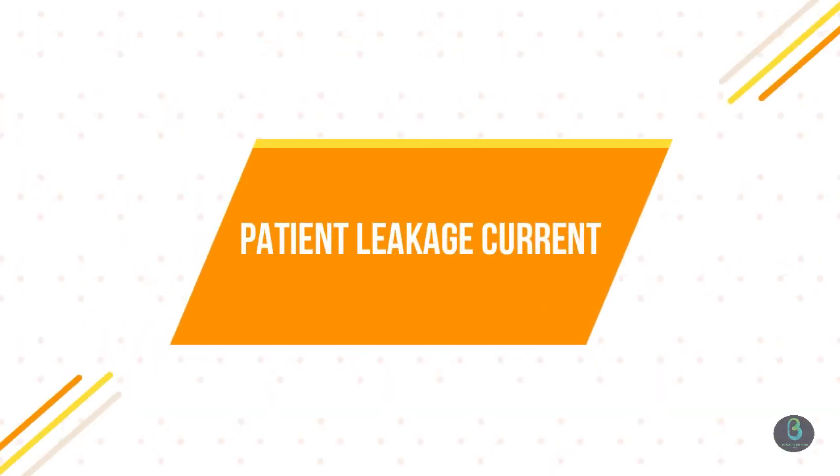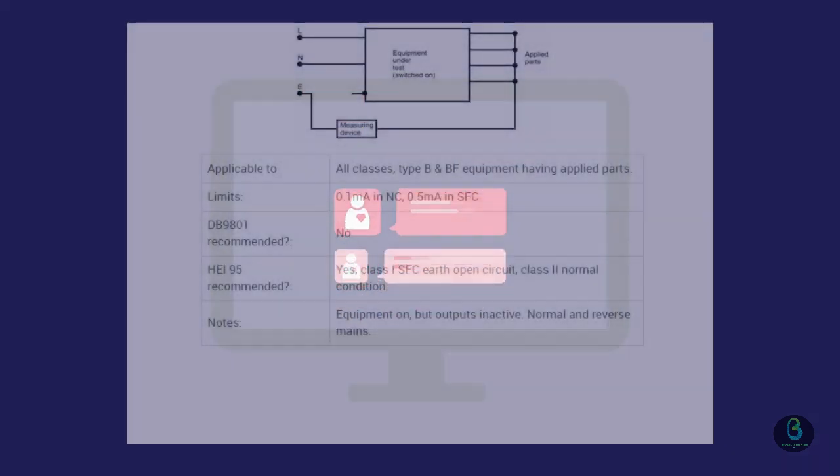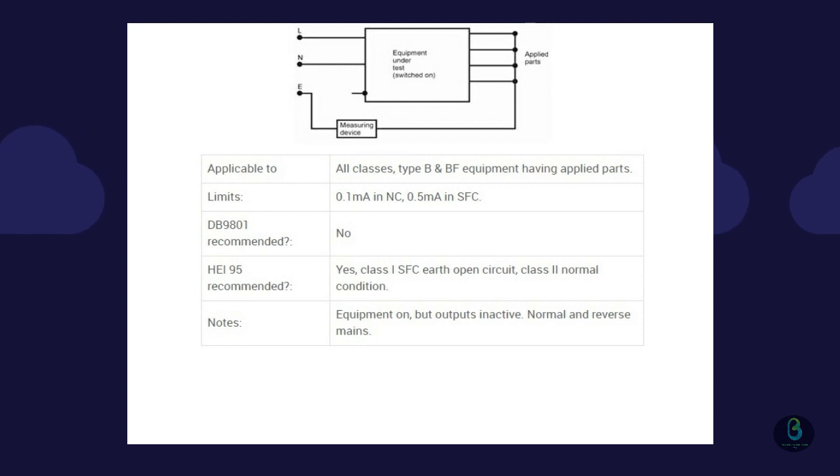Patient Leakage Current. For Class 1 and Class 2 Type B and BF equipment, the Patient Leakage Current is measured from all applied parts having the same function connected together and true earth. For Type CF equipment, the current is measured from each applied part in turn, and the Leakage Current limit must not be exceeded at any one applied part.